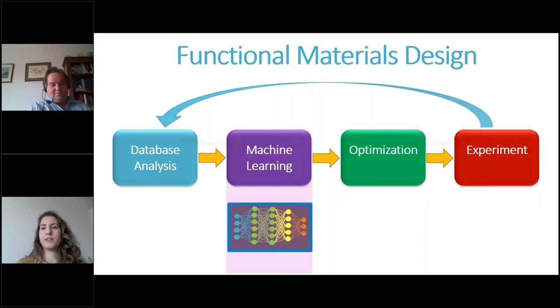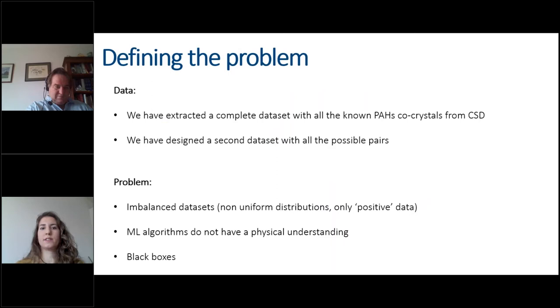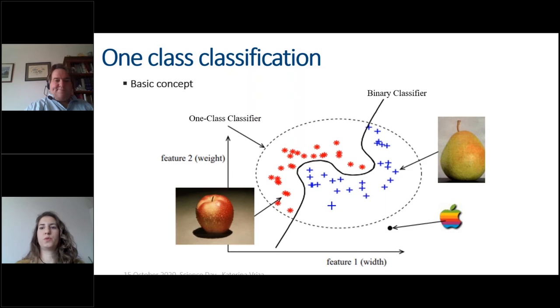After having our two datasets, then we need to find which is the best machine learning method to use for them. If we define the problem that we have at hand, we have a complete dataset with known pairs and another one with all the possible pairs, but not a dataset with negative results. So we have no information about the pairs that cannot exist. Our datasets are quite imbalanced because they're based only on positive data. And also, most machine learning algorithms do not have any chemical understanding. We don't know why they gave that predictions, because they're regarded as black boxes. So these are the problems we tried to deal with for applying machine learning.